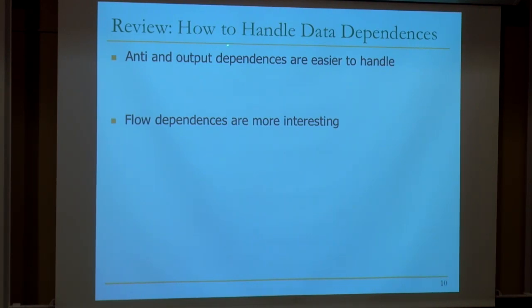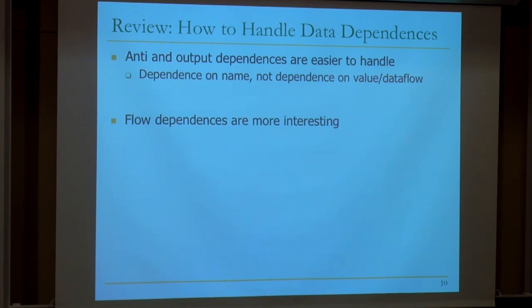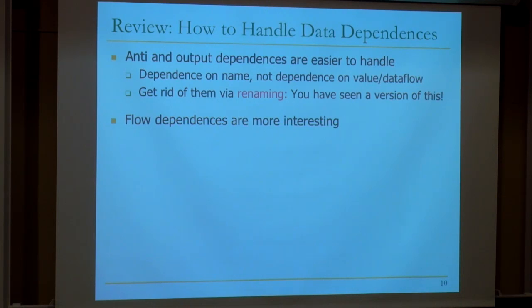Just a review — how do we handle data dependencies? Anti and output dependencies are easier to handle because they're dependencies on name, not on value. You're not communicating a value; you just have an artificial dependence because you don't have enough register names. If you always write the register at the end of the pipeline, you can handle them nicely. You can also get rid of these dependencies by renaming.